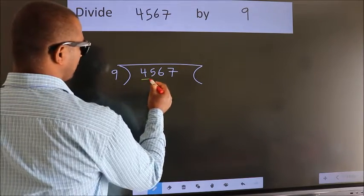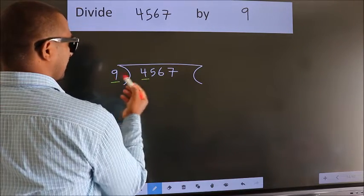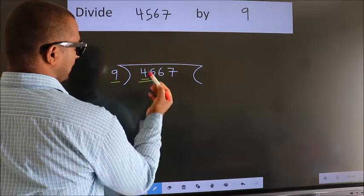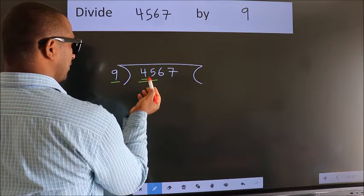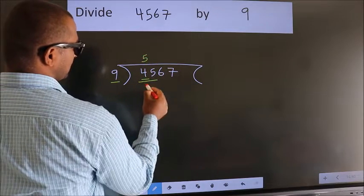Here we have 4. Here 9. 4 is smaller than 9, so we should take 2 numbers: 45. When do we get 45 in the 9 table? 9 fives, 45.